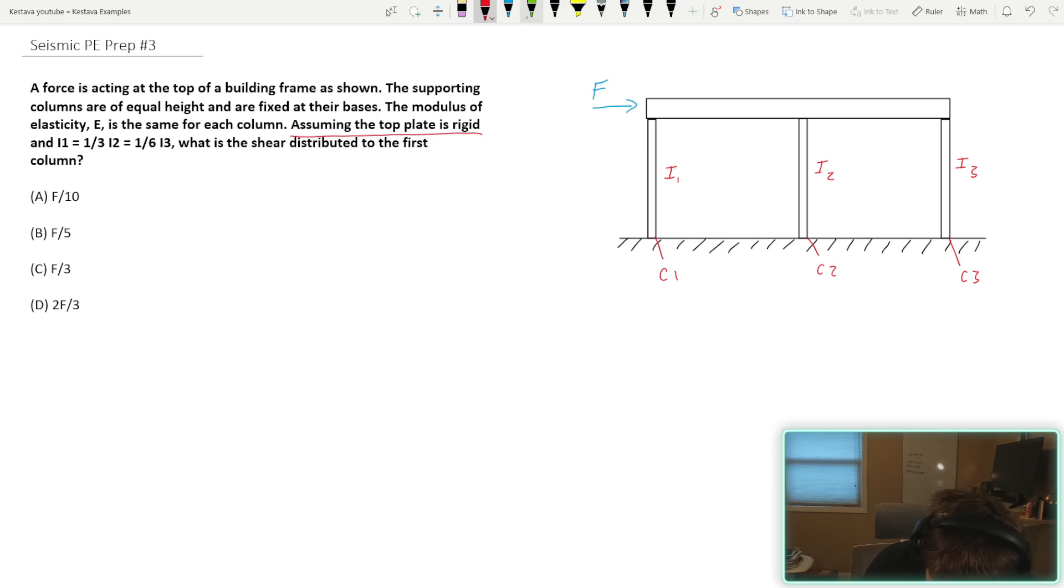Which means that we need to analyze this big honking thing that I'm highlighting in red here as a rigid diaphragm. And we all know that rigid diaphragms distribute a story force or story shear to our vertical lateral elements, depending on the stiffness or the relative stiffness of each one of those vertical lateral elements. For today's example, these are our three columns.